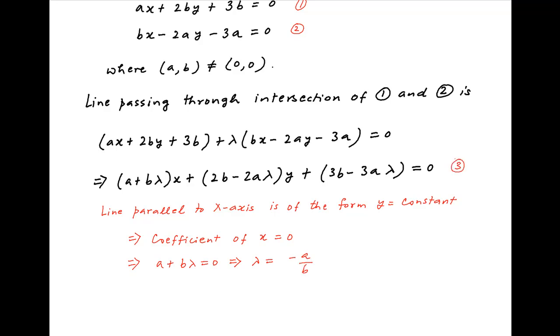Plugging this into the above equation for the line passing through the intersection of lines 1 and 2, we get the first term is equal to 0 and the second term is 2b minus 2a times minus a upon b times y plus 3b minus 3a times minus a upon b is equal to 0.